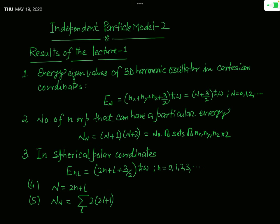When we consider a three-dimensional harmonic oscillator and write the Schrödinger equation in Cartesian coordinates, the energy eigenvalue En is found to be En = (Nx + Ny + Nz + 3/2) ħω. Assuming Nx + Ny + Nz = N, this total quantum number N equals 0, 1, 2, 3, and so on.